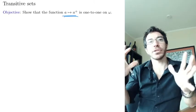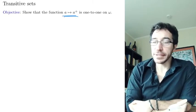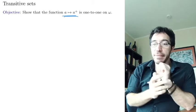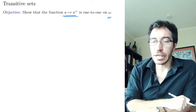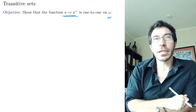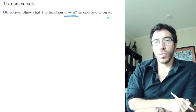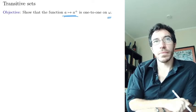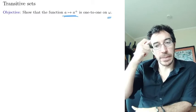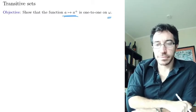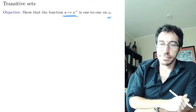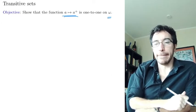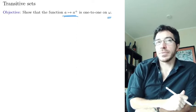We want to make sure that every natural number is built in a unique way and there are no loops. The function a to a-plus is not necessarily one-to-one everywhere, at least with the axioms we have so far. It's going to be one-to-one at the end, but we don't have those axioms yet.